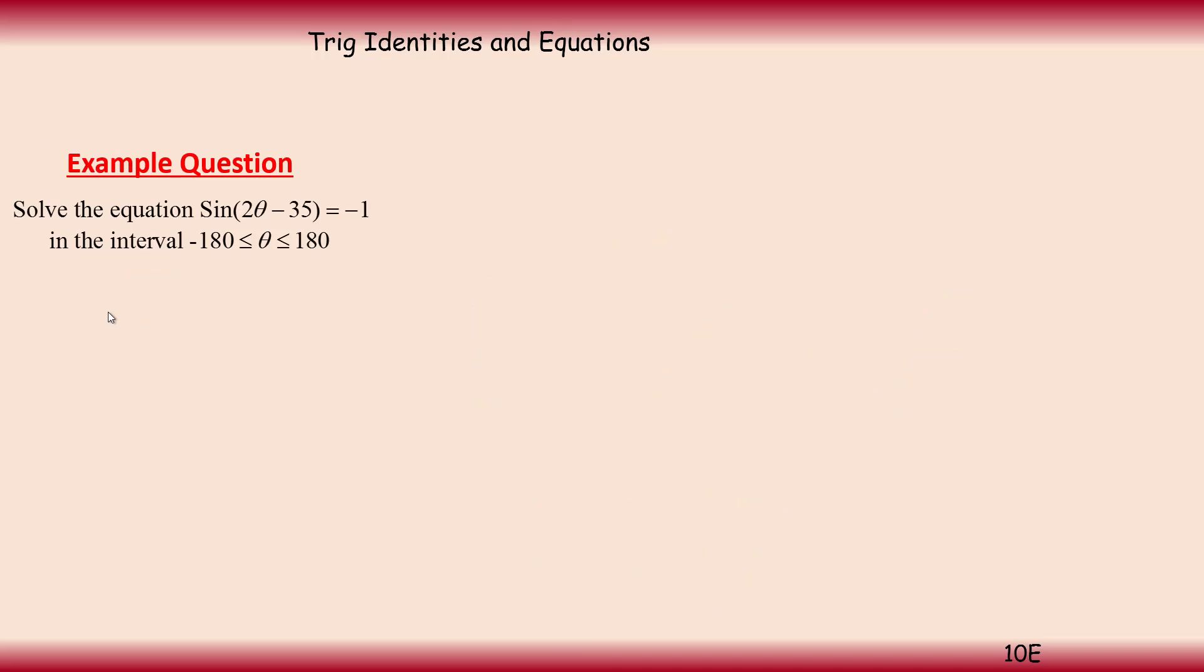Okay, so let's have a look at this second example. It says solve the equation of sine of 2θ minus 35 equals minus 1, and the interval is from minus 180 to positive 180. But that interval is for θ. We need the interval for 2θ minus 35. So that's our first thing we've got to work out. What interval are we working on?